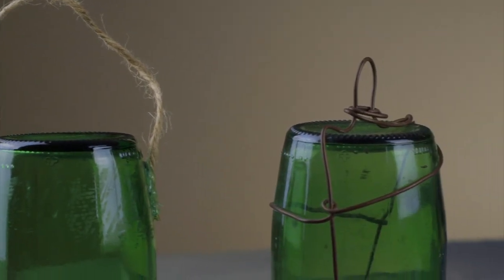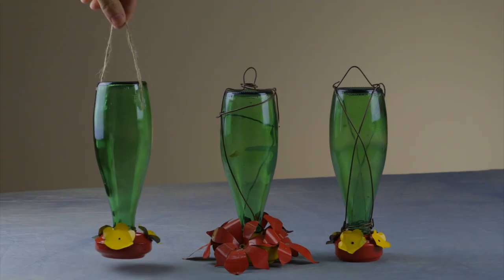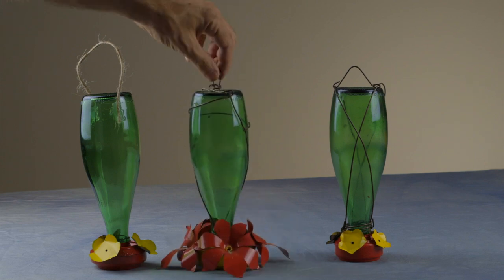Attach a hanger onto the bottle using twine, hot glue, or wire. Here are a few examples. Your hummingbird feeder is now finished!